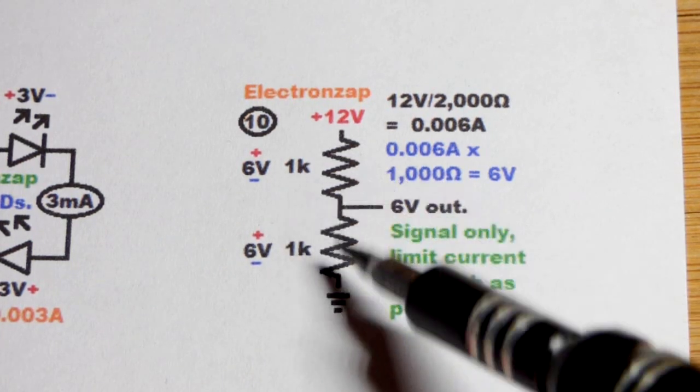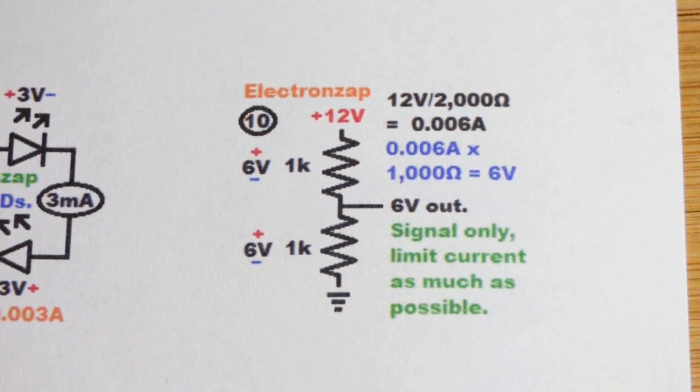That's because they are equal value there. You can adjust the value resistors to change the percentage of the supply voltage that's coming out. But for two equal values, it is half.